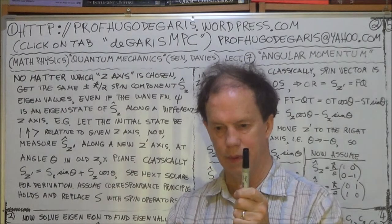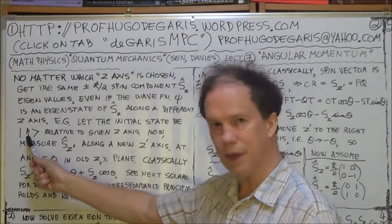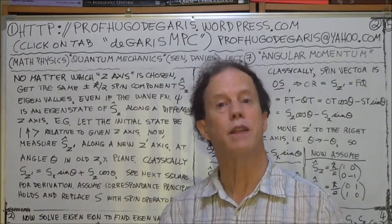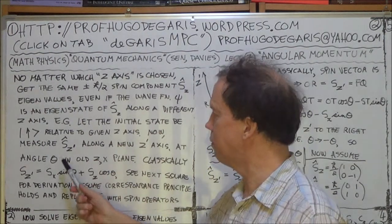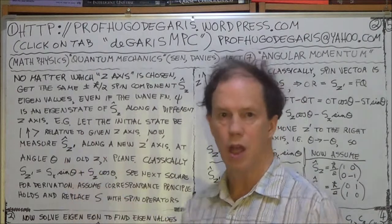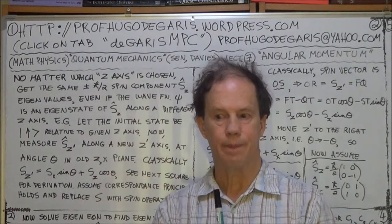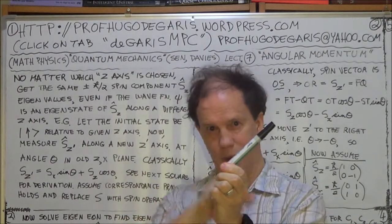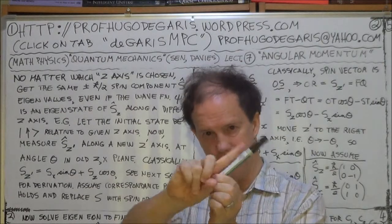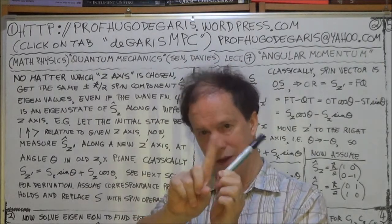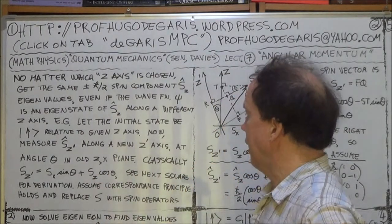So they become the initial state, just up state for the second measurement experiment where you're trying to find, you're measuring what is the component of the angular momentum along the z-dashed axis, which is this one, which is at orientation theta degrees compared to the original z, the vertical.